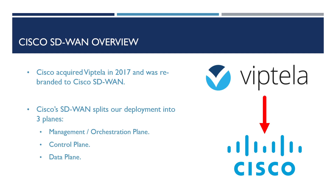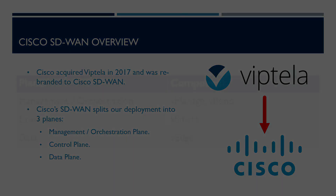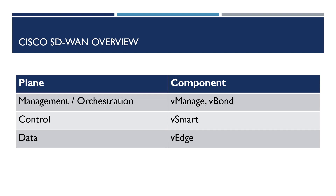Cisco's SD-WAN solution is a rebrand of the original Viptela solution that Cisco acquired in 2017. Cisco's SD-WAN solution is split into three planes. The management and orchestration plane is responsible for central monitoring and configuration, in addition to assisting with automatic onboarding of SD-WAN routers into the overlay network. The control plane is used to build and maintain the network topology and make decisions on where traffic should flow. Finally, the data plane is responsible for forwarding the packets based on the decisions that are made by the control plane.